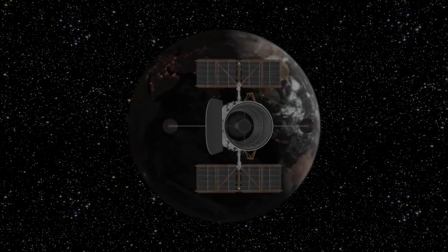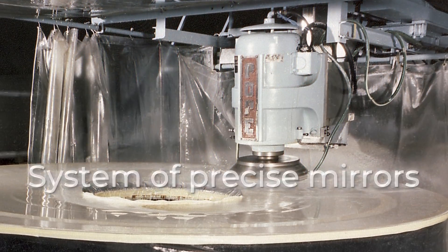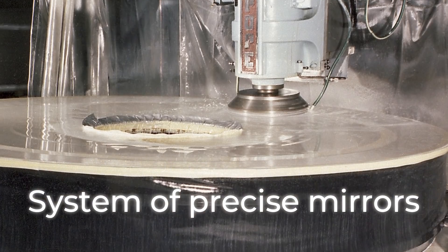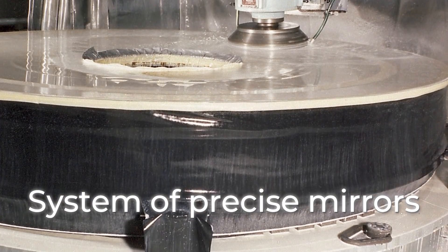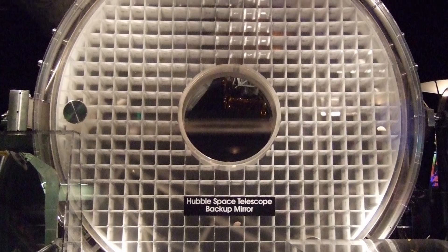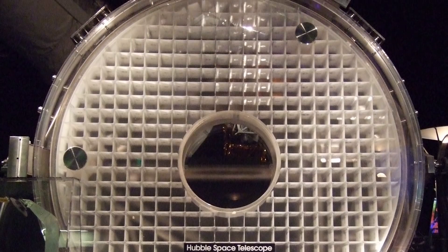I would like to say a few words about the structure of the Hubble Telescope. Such telescopes use a system of precise mirrors instead of lenses, as cameras do. The mirror and optical systems are considered the most important parts of its design.